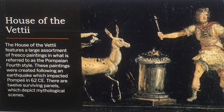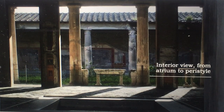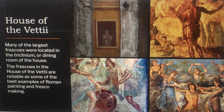The House of Veti features a large assortment of fresco paintings in what was referred to as the Pompeian Fourth Style. These paintings were created following an earthquake which impacted Pompeii in 62 CE. There are 12 surviving panels which depict mythological scenes. Many of the largest frescoes were located in the triclinium, or dining room of the house. The frescoes are notable for some of the best examples of Roman painting and fresco making.